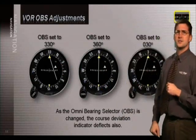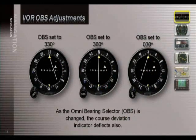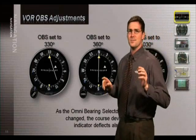When you set the OBS to 030 degrees, the needle deflects to the left so you can intercept the 030 degree radial. Now let's put this concept into motion.